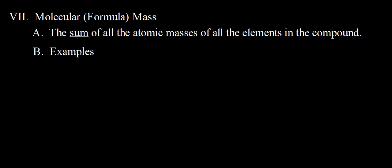Next up — very, very important for this class — is knowing how to calculate molecular mass or formula mass. These are different names for the same thing. We call it molecular mass when calculating the mass of a molecular compound, and formula mass for an ionic compound. The approach is the same; just different names for different types of compounds. Molecular mass or formula mass is simply the sum of all the atomic masses of the elements in a compound.